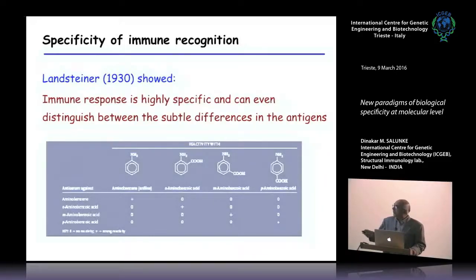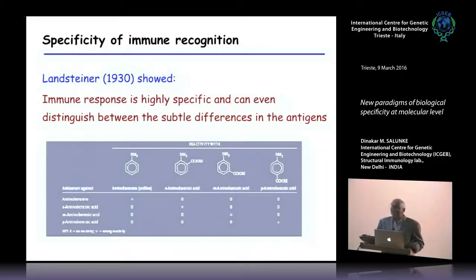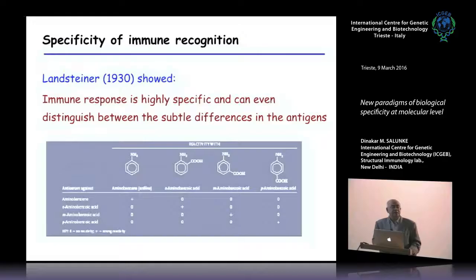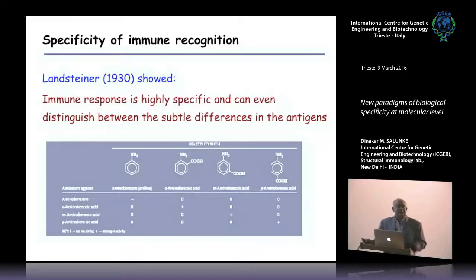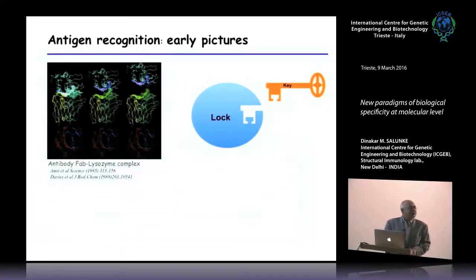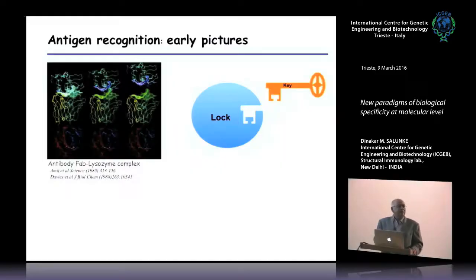Antibodies raised against aminobenzene do not cross-react with any of the other derivatives of this molecule, and vice versa. These are polyclonal antibodies, and this was elegantly demonstrated simply by immunizing animals with these small entities — even small differences between them were so distinctly discriminated by the immune system.